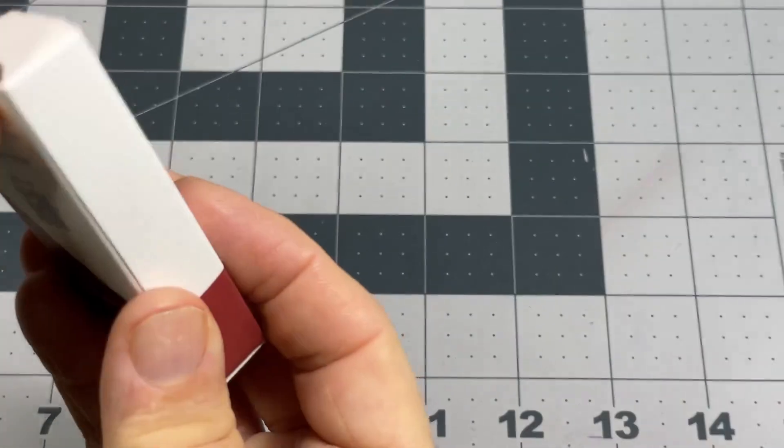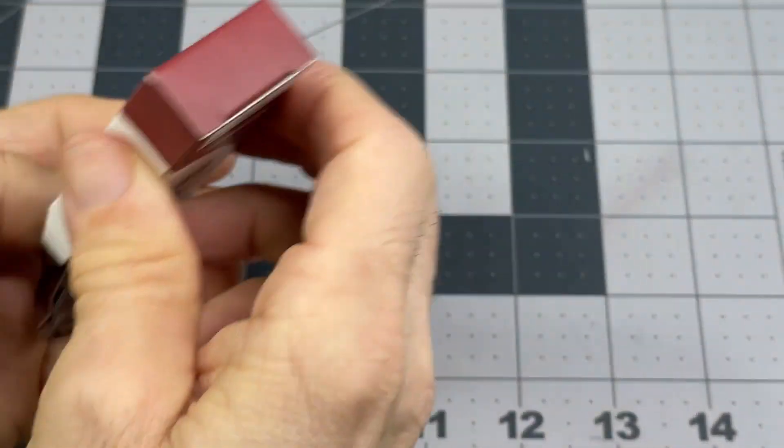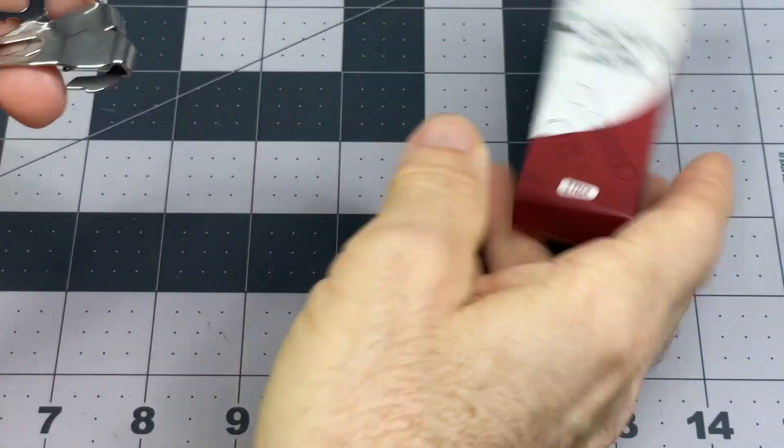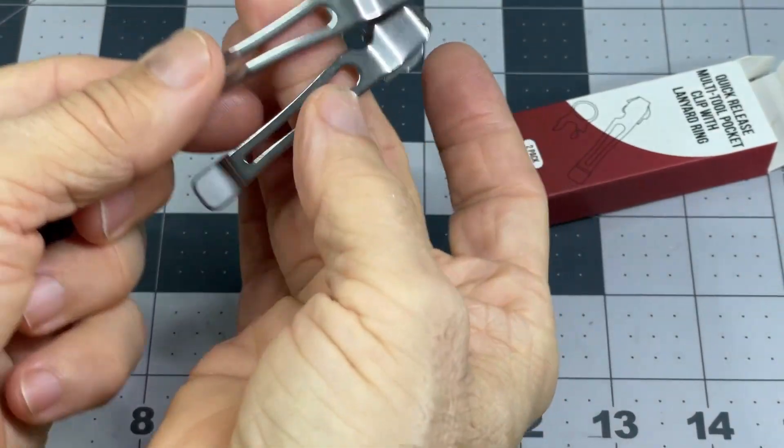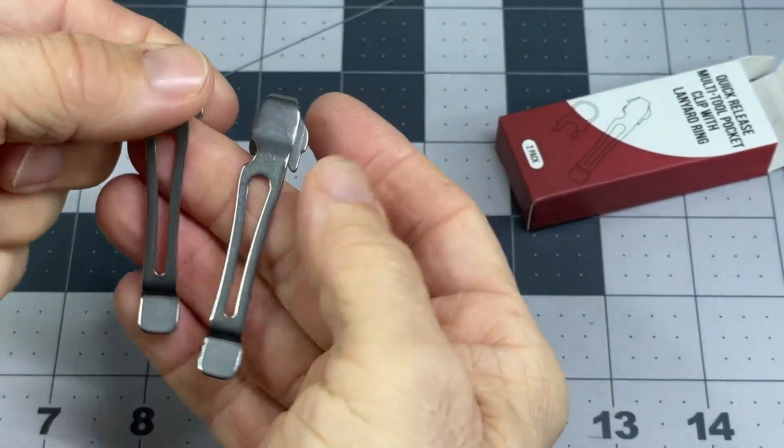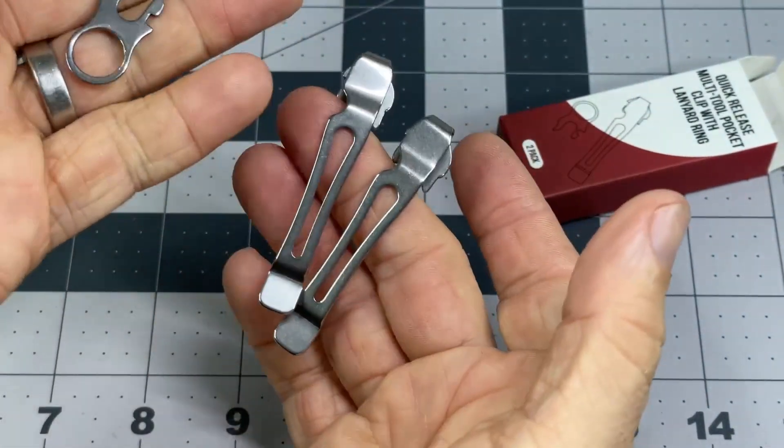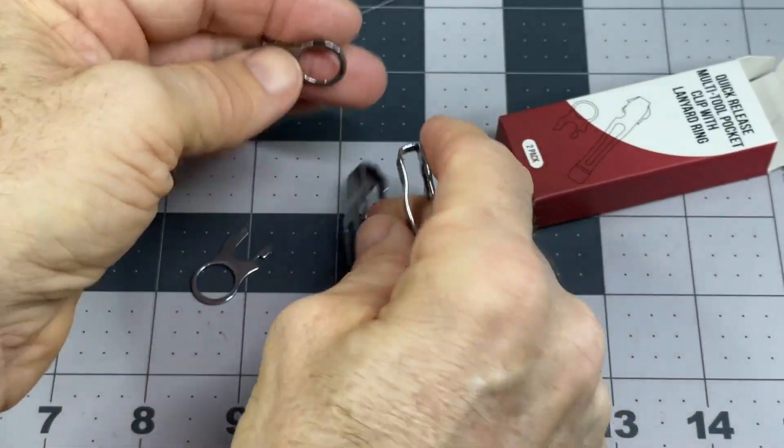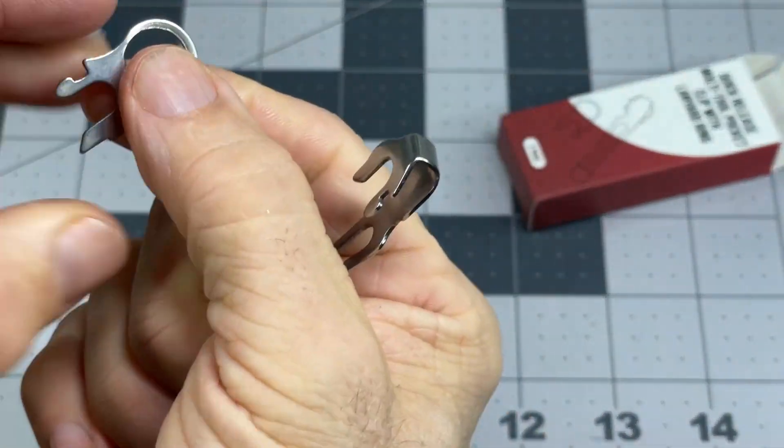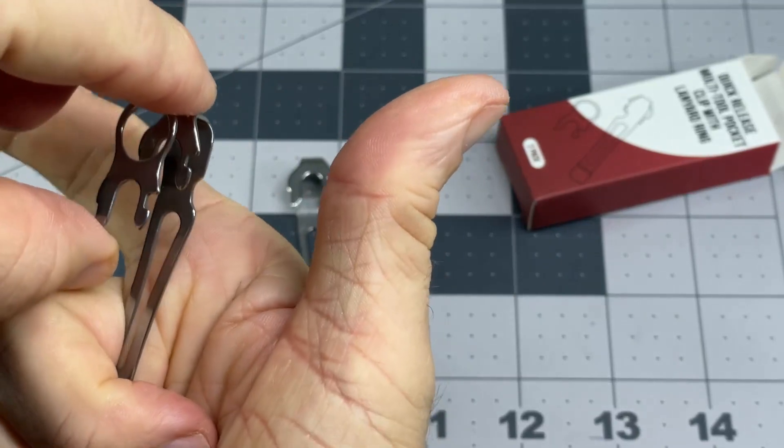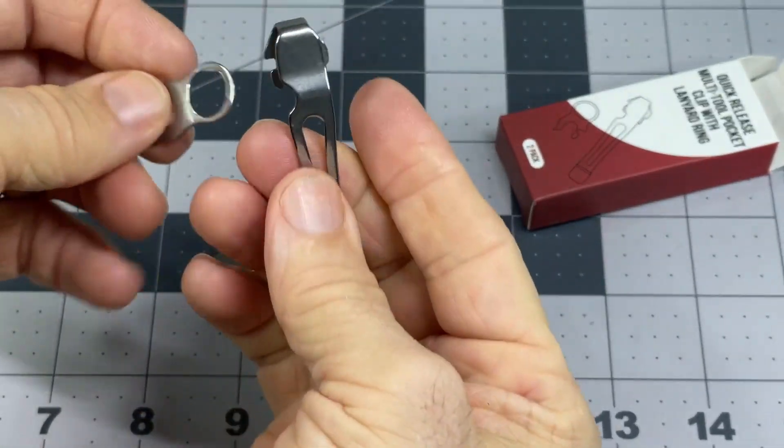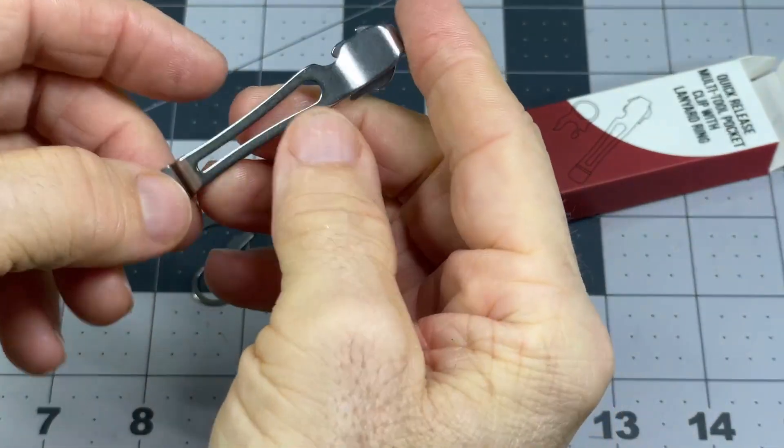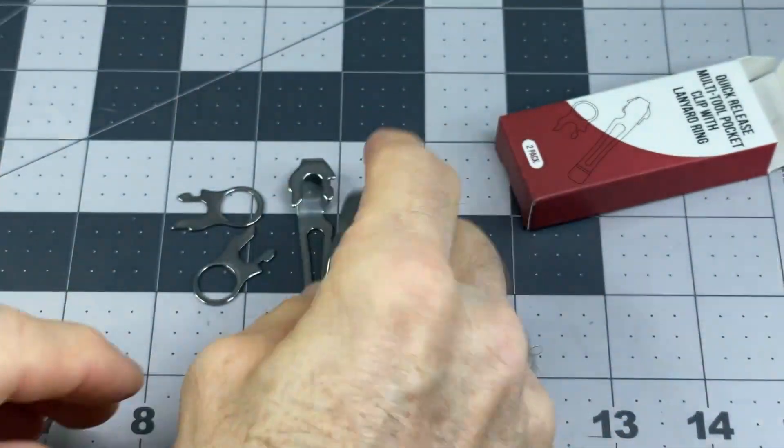I'm interested to see what these will do. I thought it was just one belt clip, but it actually is both. So it gives you two options here for clipping onto the Leatherman tool.